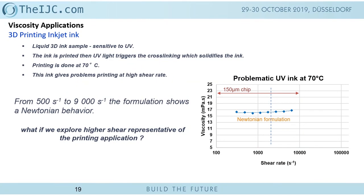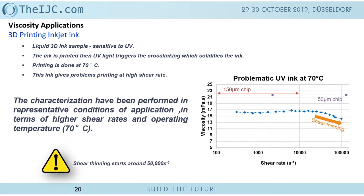Here is another example with a 3D inkjet ink analyzed at 70 degrees Celsius — the temperature of the process. First measurements at lower shear rates using a 150-micrometer chip showed a Newtonian profile. But with a narrower chip, shear thinning appeared — the solution was no longer Newtonian. This is why characterizations must be performed in representative conditions, since in inkjet applications the shear rates are much higher than those tested initially.